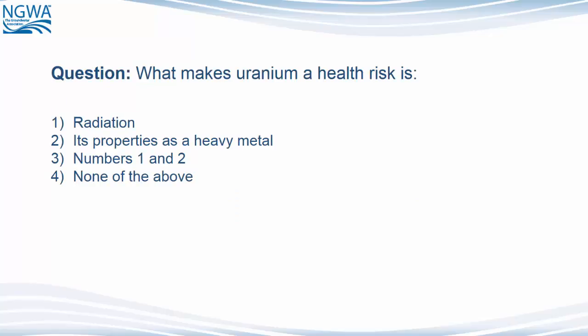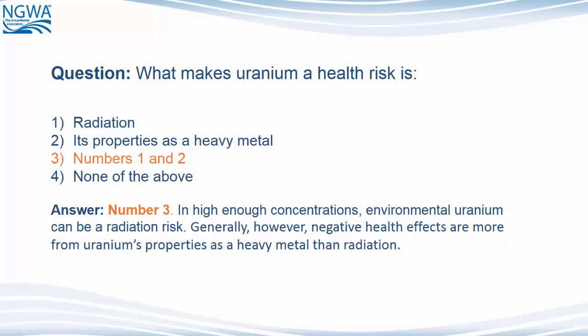What makes uranium a health risk? 1. Radiation. 2. Its properties as a heavy metal. 3. Numbers 1 and 2. 4. None of the above. The answer is number 3 — numbers 1 and 2. In high enough concentrations, environmental uranium can be a radiation risk. Generally, however, negative health effects are more from uranium's properties as a heavy metal than radiation.